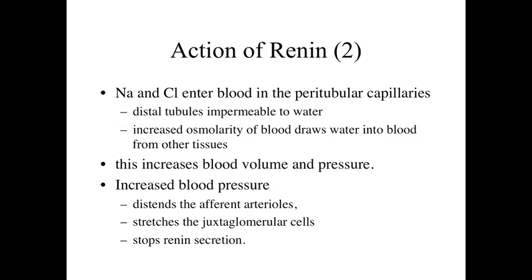Sodium and chloride drawn into the body through the distal tubules enter the peritubular capillaries, drawing water in and increasing blood volume and pressure. This increased blood pressure stretches the afferent arterioles and the juxtaglomerular cells, which causes renin secretion to decrease or stop. So decreased blood pressure caused the JG cells to release renin, renin activated angiotensin II, blood volume and pressure increased, stretching the JG cells and turning off renin secretion — a good negative feedback system for regulating renin secretion, blood volume, and blood pressure.